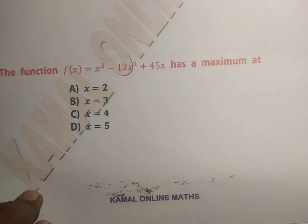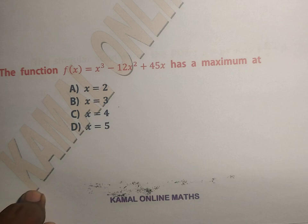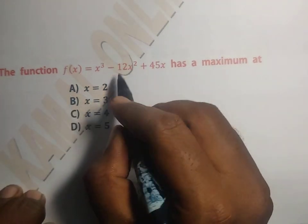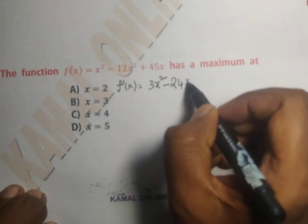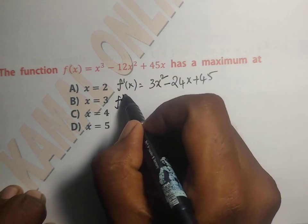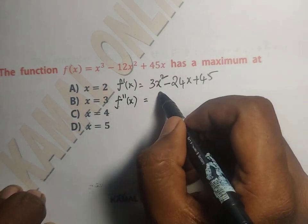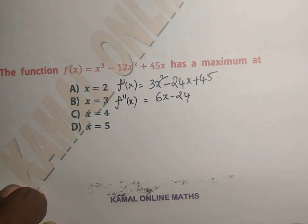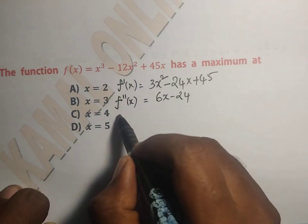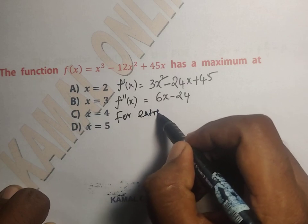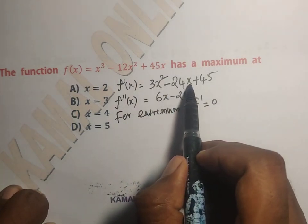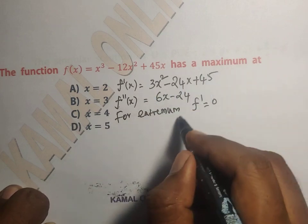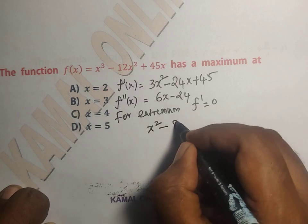Next question: The function f(x) = x³ - 12x² + 45x has a maximum at x equal to which point? Given f(x), differentiate: f'(x) = 3x² - 24x + 45. For second derivative: f''(x) = 6x - 24. For maximum or minimum points, set f'(x) = 0: 3x² - 24x + 45 = 0, which simplifies to x² - 8x + 15 = 0.